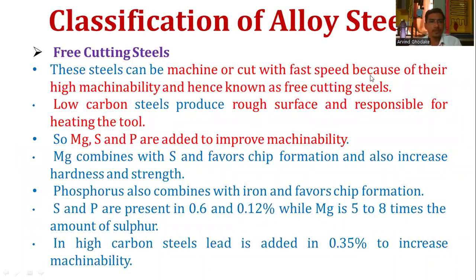The first classification is free cutting steel. These are steels that can be machined or cut at fast speed because of their high machinability, and hence are known as free cutting steels. Low carbon steel produces a rough surface and causes tool damage, so manganese, sulfur, and phosphorus are added to improve machinability.